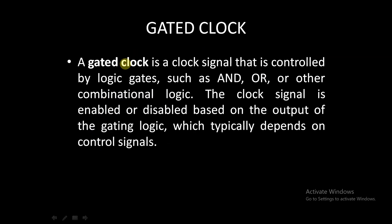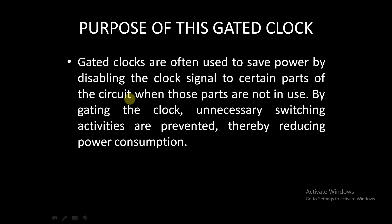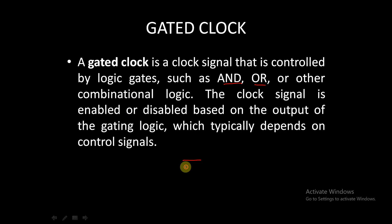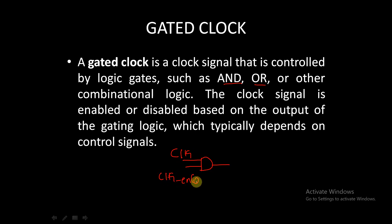A gated clock is a clock that is controlled by logic gates such as AND, OR, or other combinational logic. The clock signal is enabled or disabled based on the output of the gating logic, which typically depends on the control signal. For example, in a gated clock, the clock is given to one input and clock enable is given to the other input.